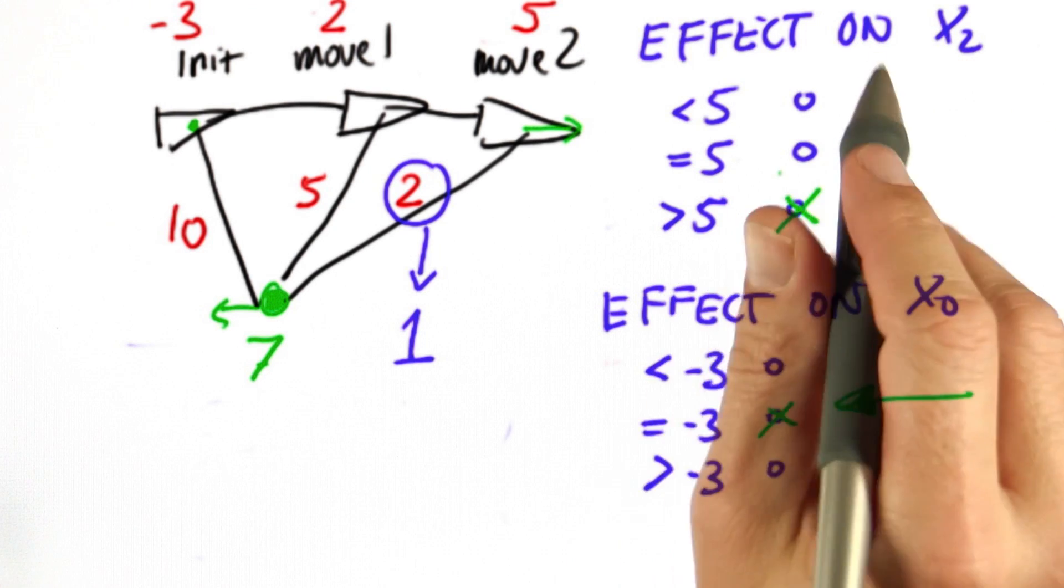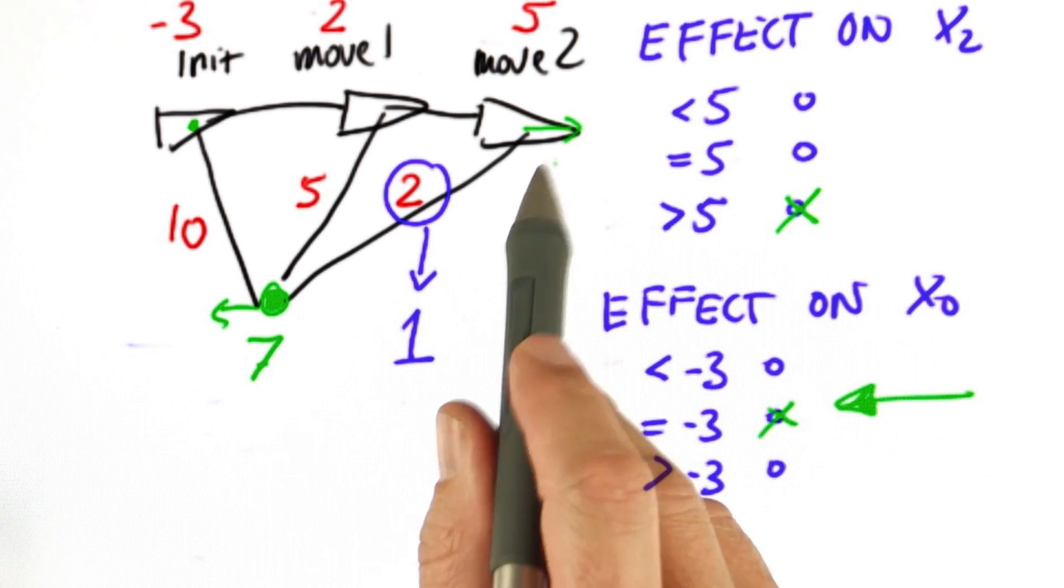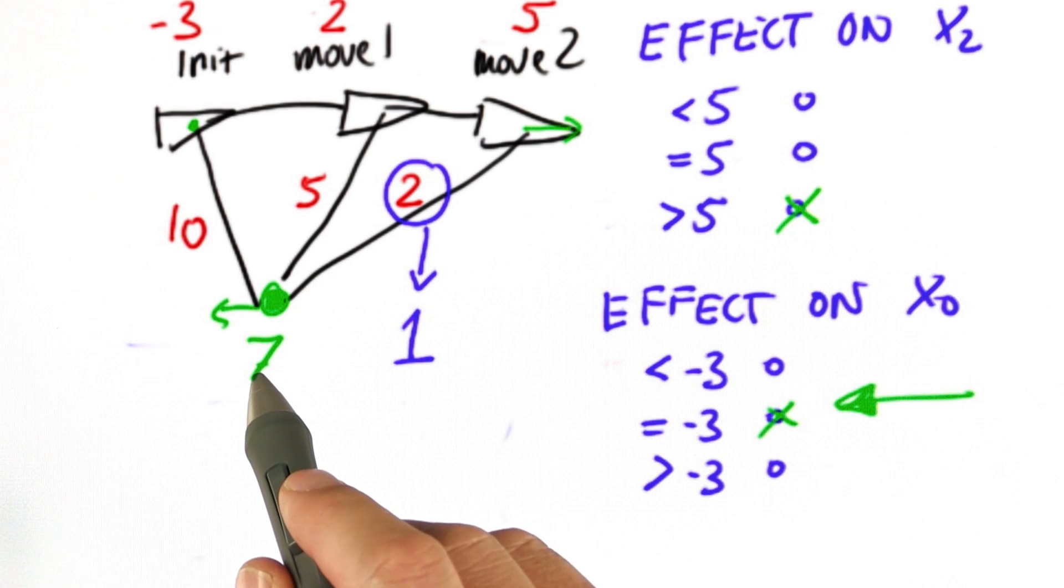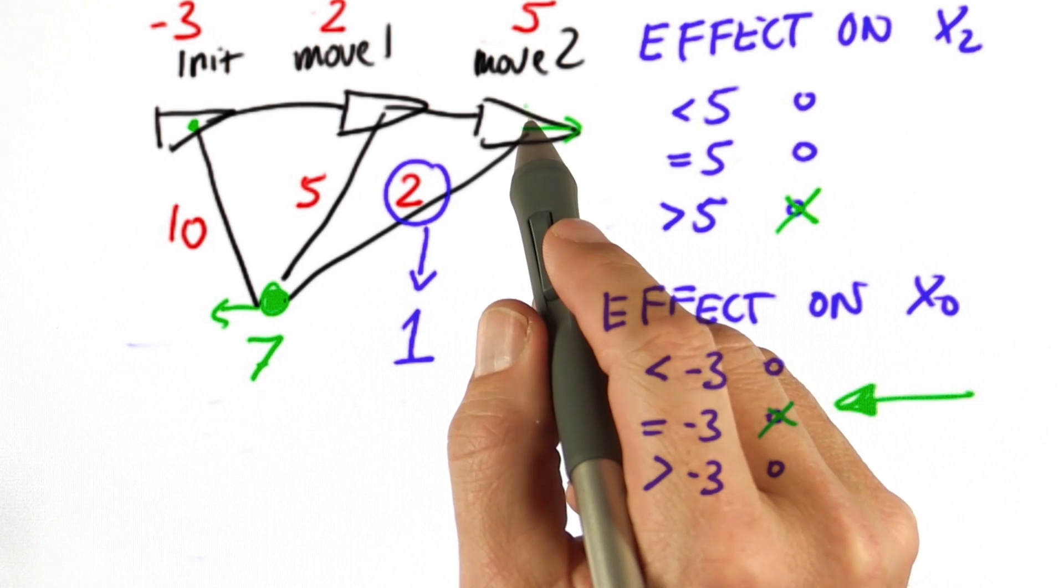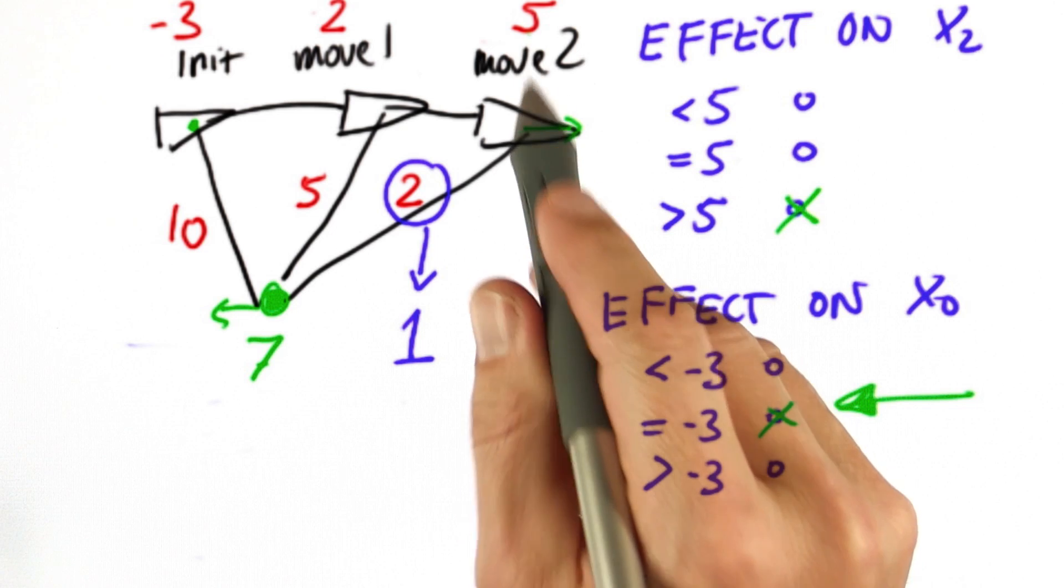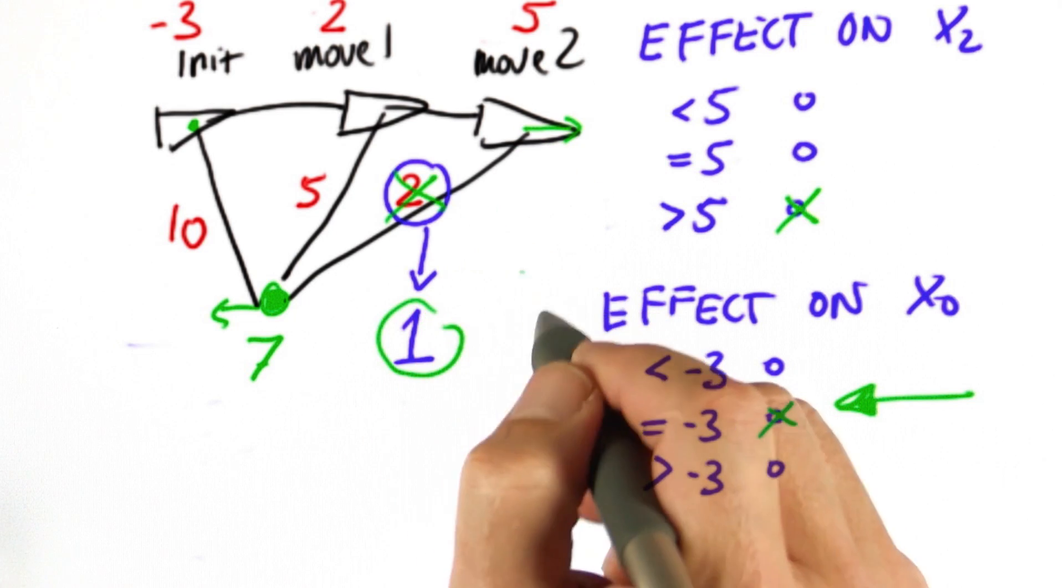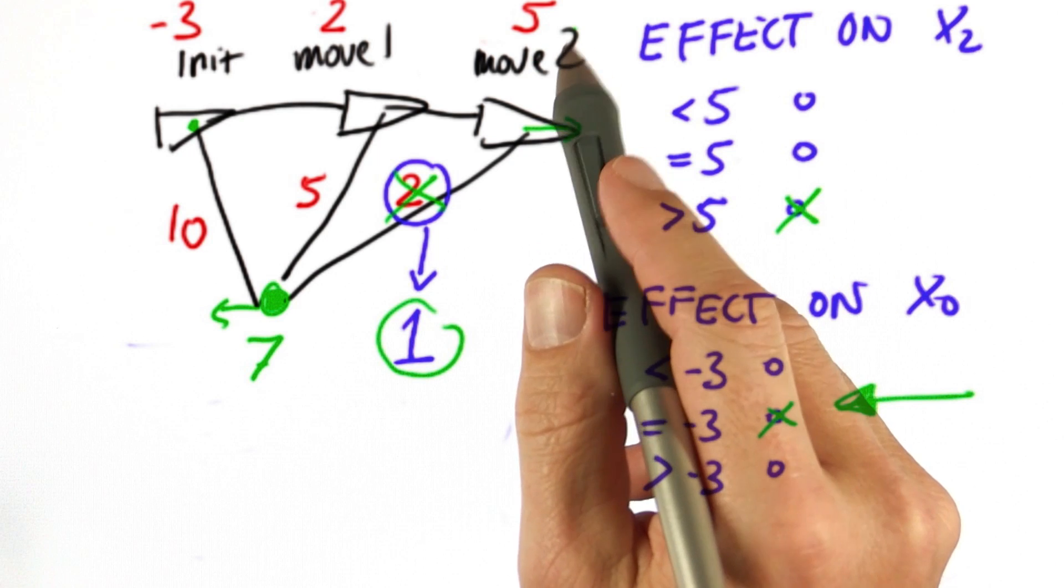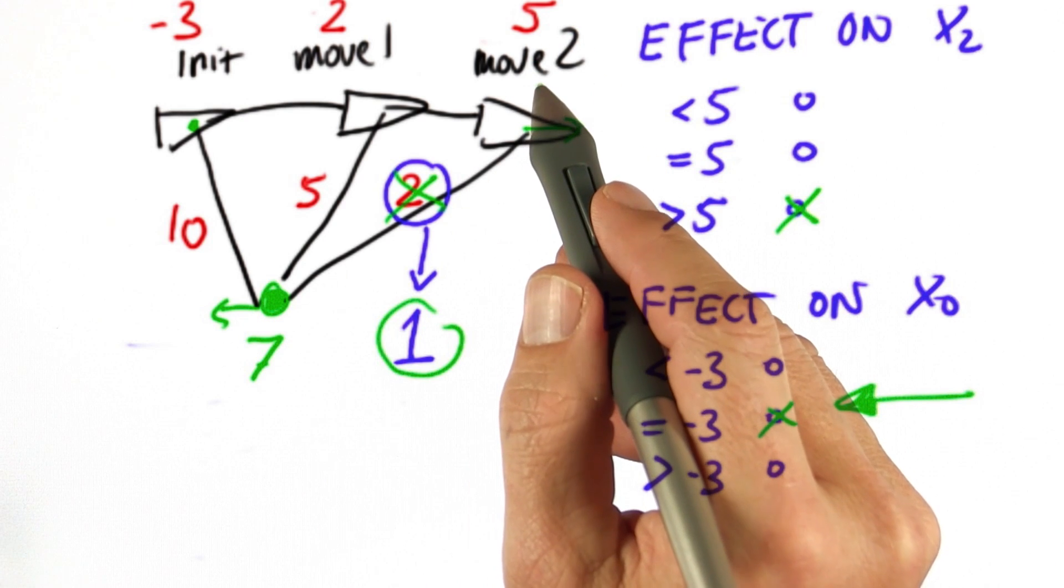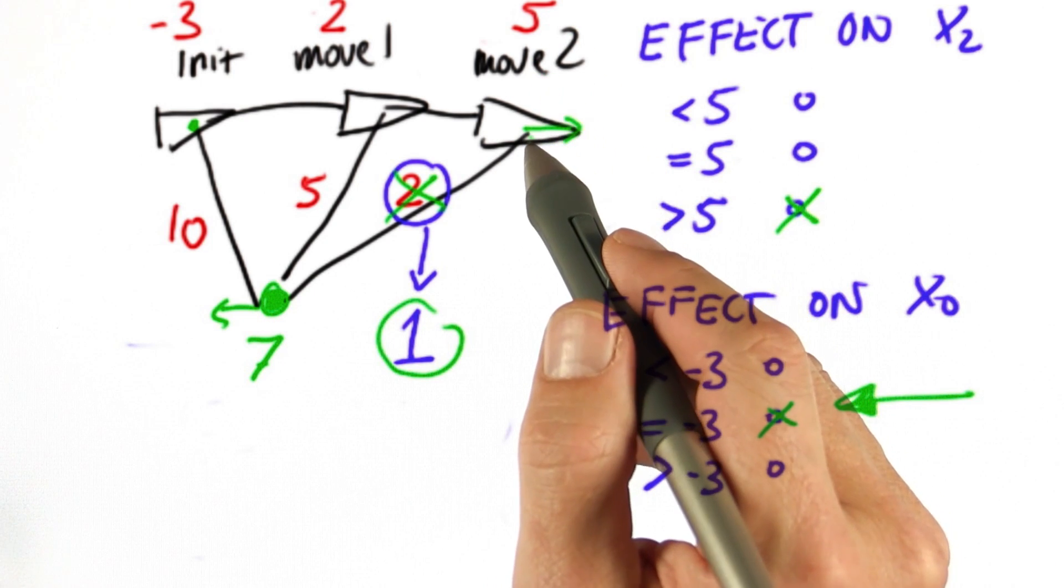The reason why it becomes larger than 5 is, well, think about rubber bands. Our landmark is at around 7. We believe to be at position 5 in the noise-free case. We just put a tighter rubber band between them. It's not 2 anymore. It's now 1. And that means we're inclined to move the landmark and this position closer together. And that's exactly what happens.